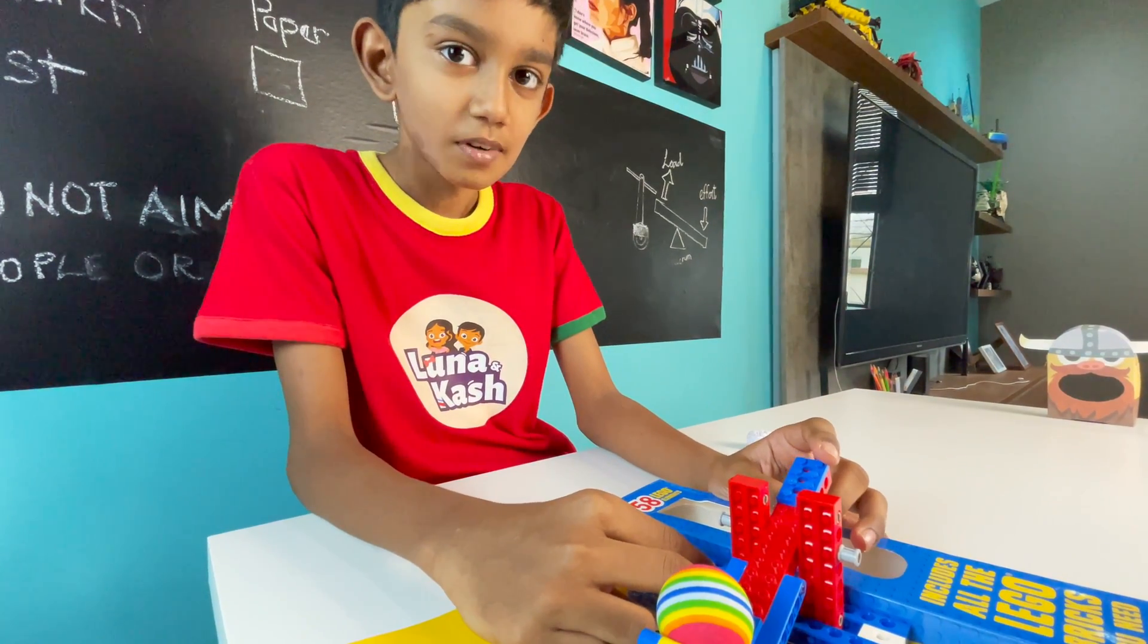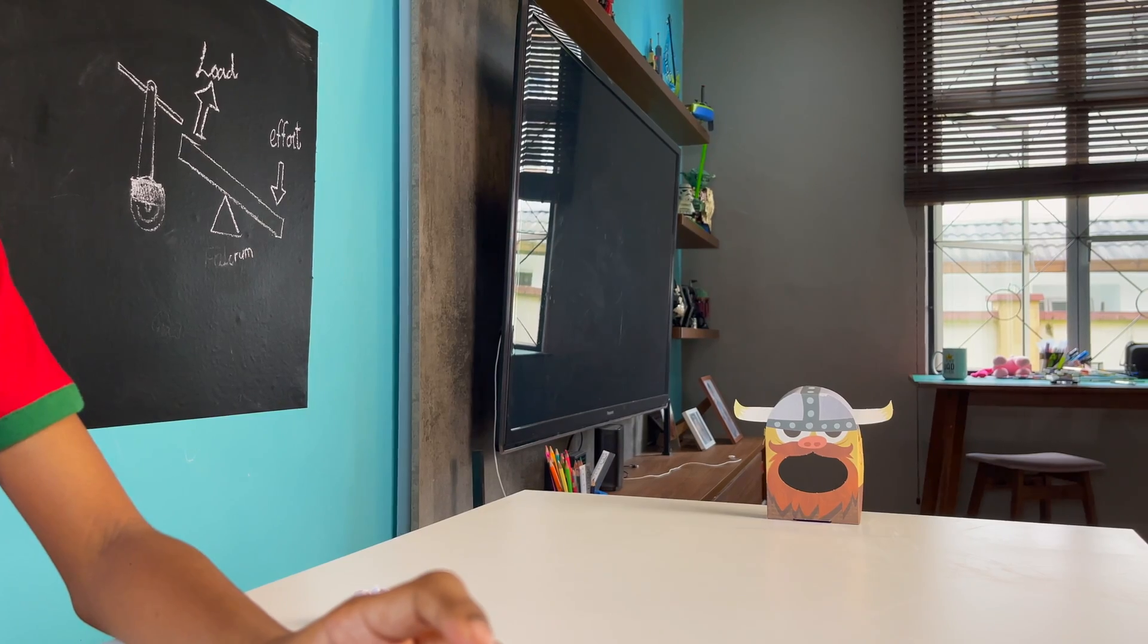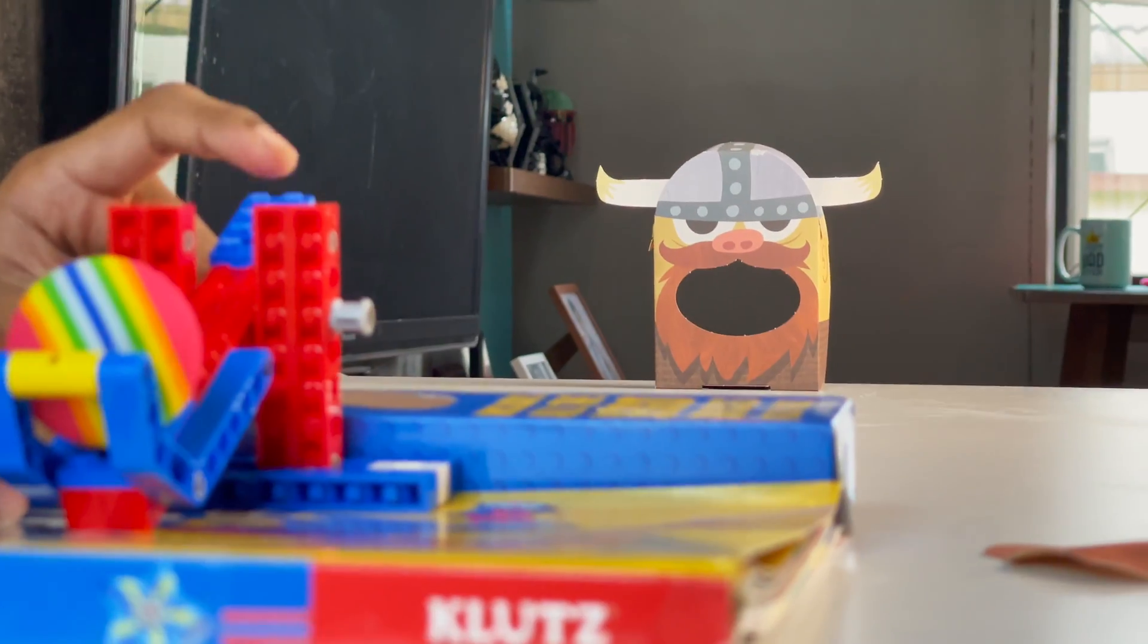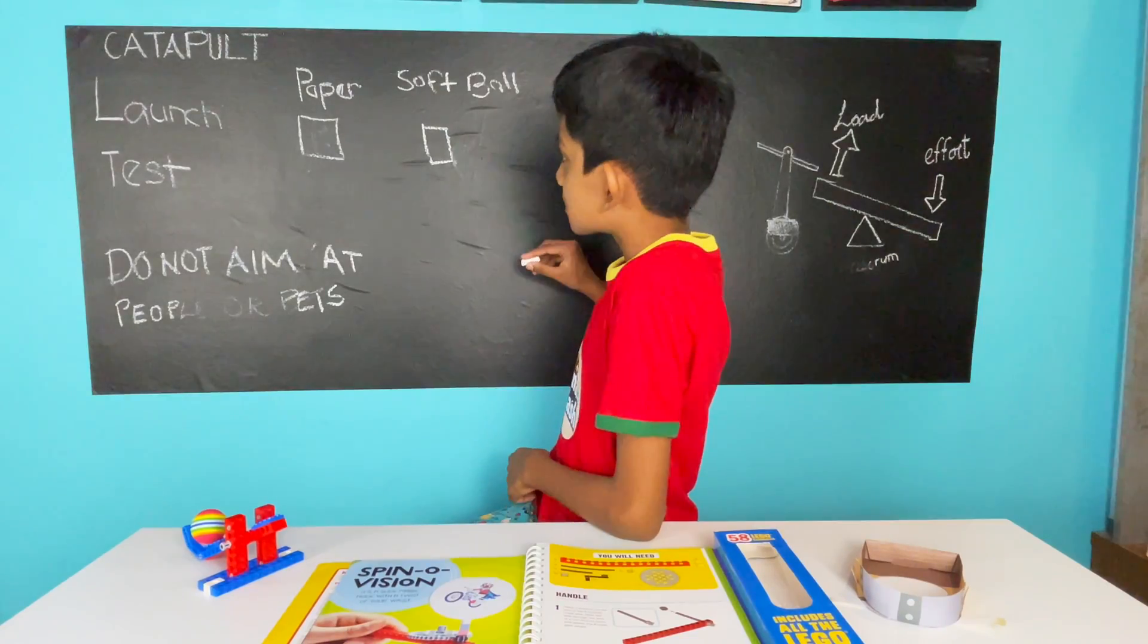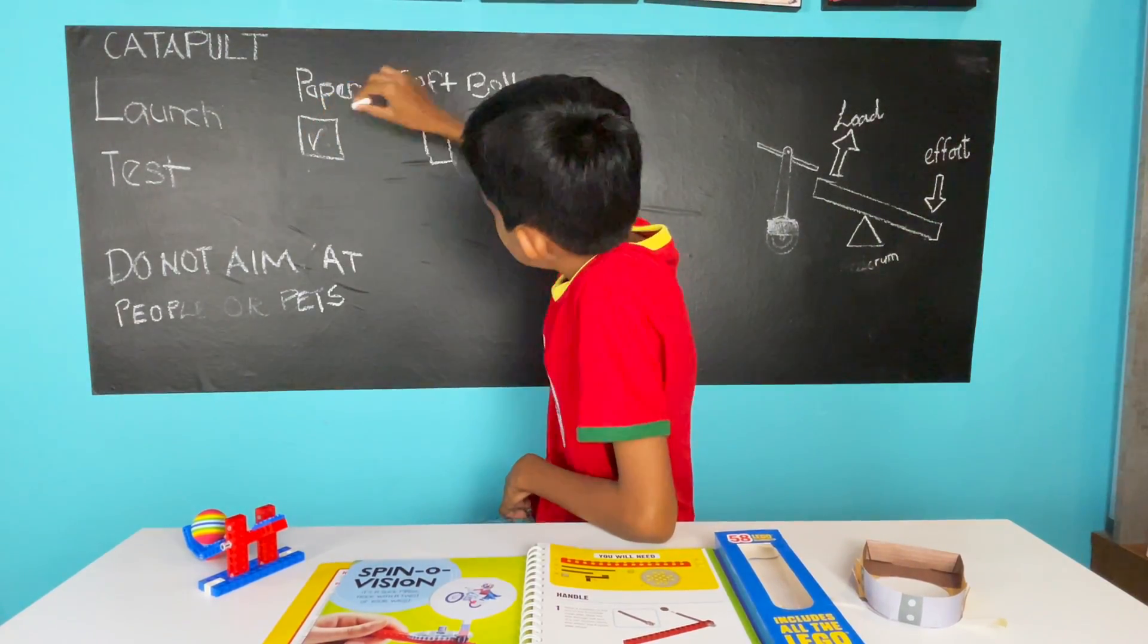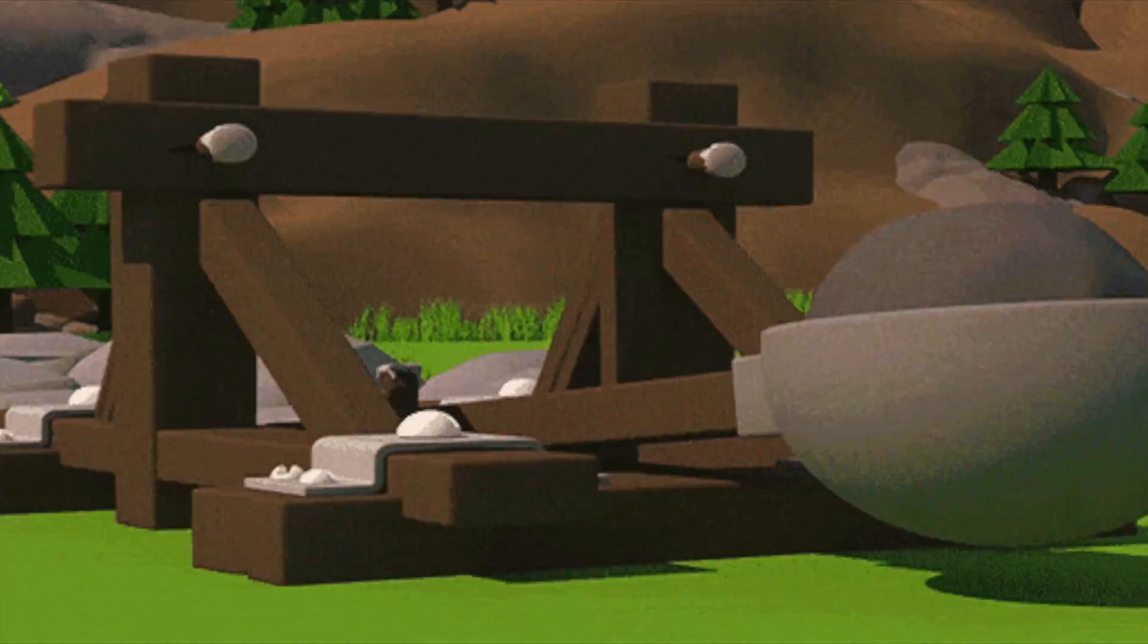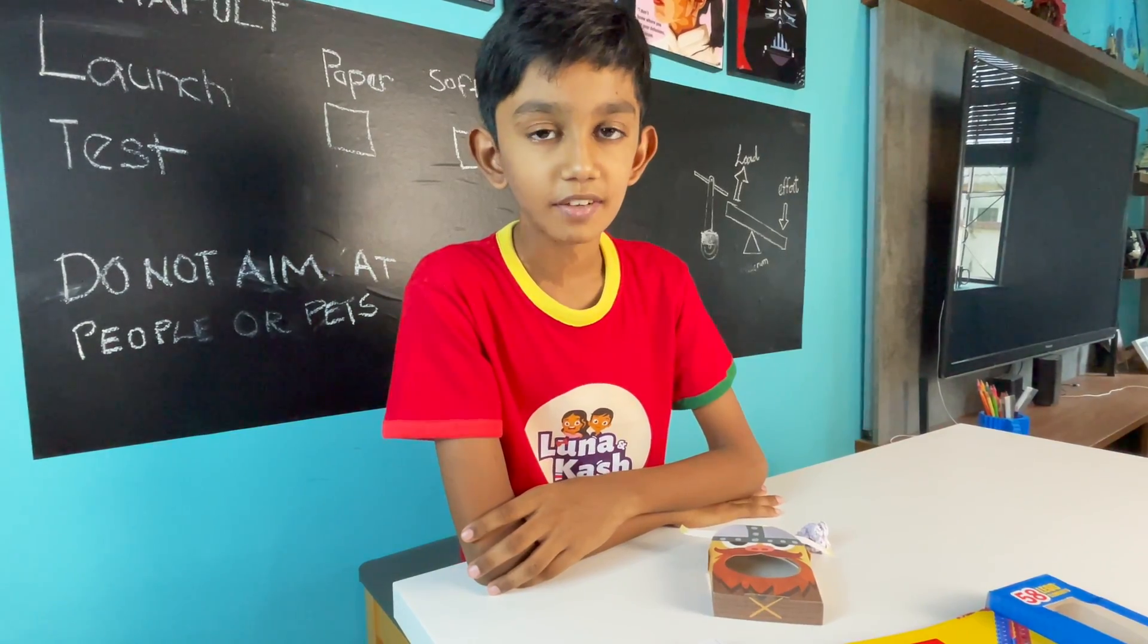Now I am going to try the soft ball which is heavier than the paper ball. Let's see if we can knock the Viking down. Launch test. Paper and soft ball pass. We knocked the Viking down easily with heavier projectiles because heavier projectiles travel farther and move forward at a faster speed.